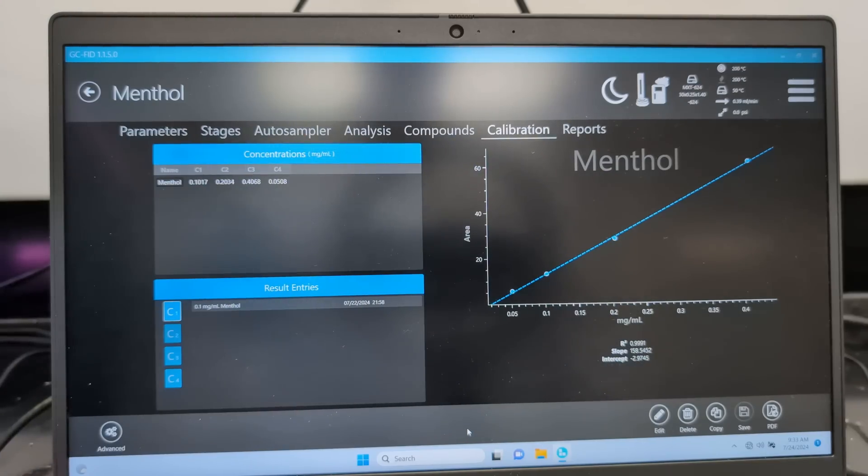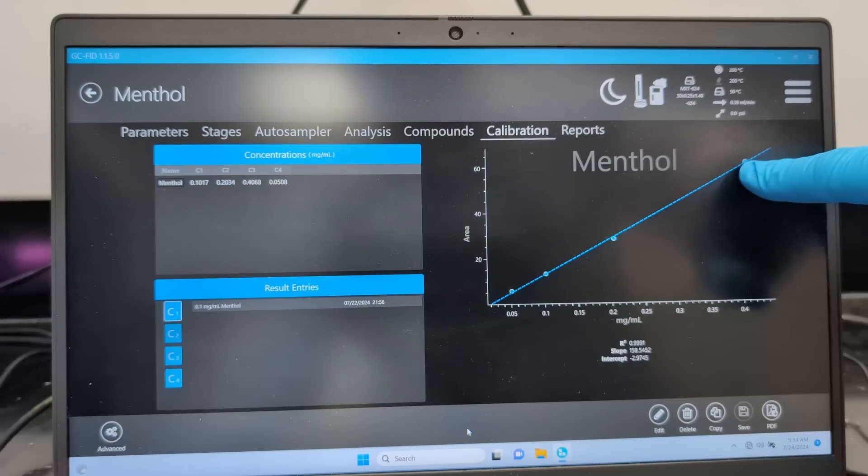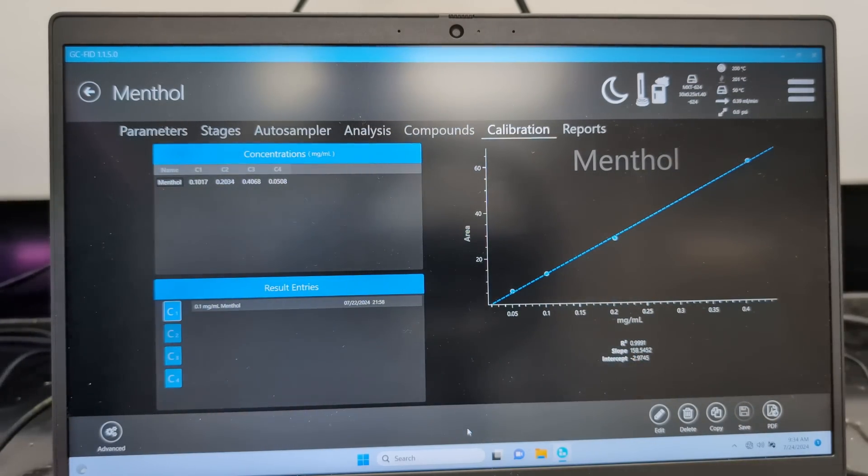Once I got my mass and I've got my standards and I've done my dilutions, I've done an actual calculation. I thought I was going to do 0.1 all the way up to 0.4, but I actually did 0.0508 all the way up to 0.4068. So those are my actual masses. You can see here I've got my nice four-point curve. I've got a nice 0.9991 R-squared value, so this is the actual calibration curve that I made.